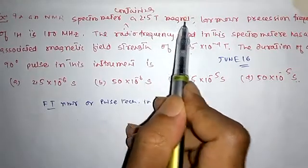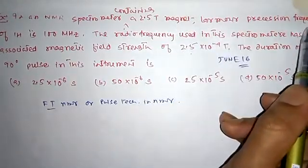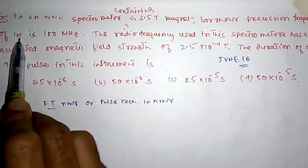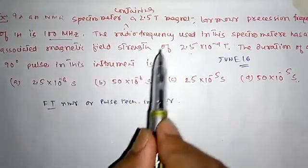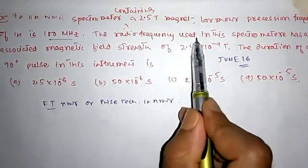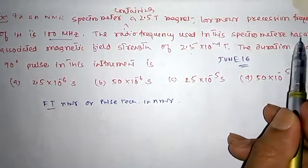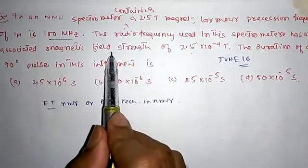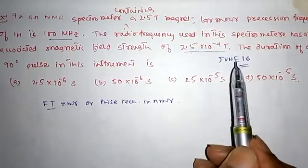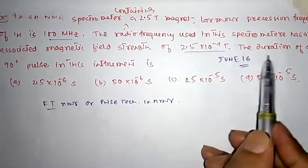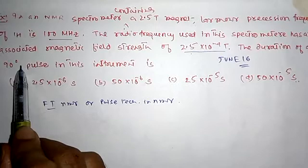2.5 Tesla magnet, the Larmor frequency for proton is 100 MHz. The radio frequency in this spectrometer has an associated magnetic field strength of 2.5 × 10^-4 Tesla. The duration of the 90 degree pulse in this instrument...